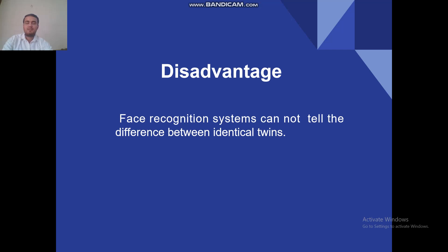Everything has a disadvantage as well. Face recognition system has one disadvantage: it cannot tell the difference between identical twins. If you have a brother or sister who looks exactly like you, then it will confuse the face recognition system.